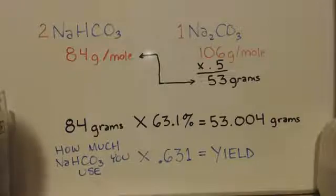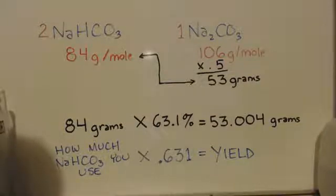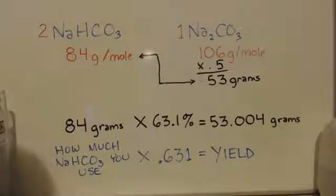You weigh up your stuff, whatever you put here, your number, multiply that by 0.631, and that will be the 63%, and that will give you your yield. If you have 10 or 100 grams, 100 times this would give you 63.1 grams.